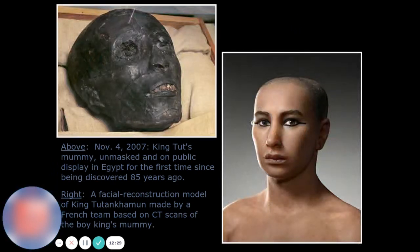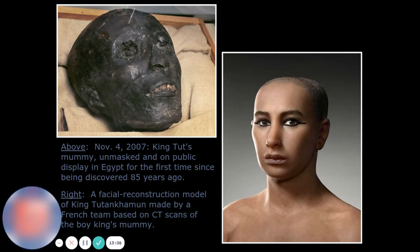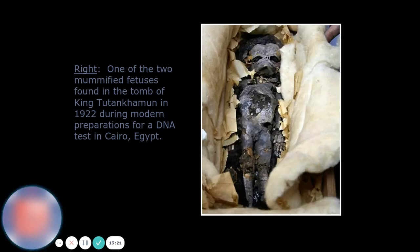This is King Tut's mummy mask on public display in Egypt for the first time since being discovered 85 years ago. This is a facial reconstruction model of the boy king's mummy, made by a French team based on CT scans. One of two modified fetuses found in the tomb of King Tutankhamun in 1922 is shown here, during modern preparations for DNA testing in Cairo, Egypt.